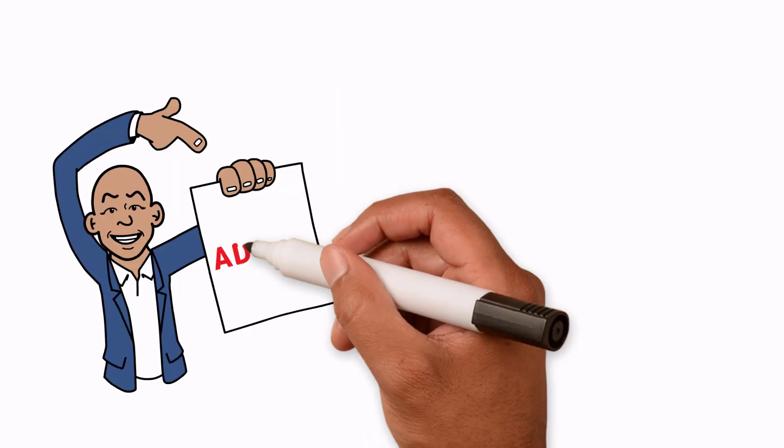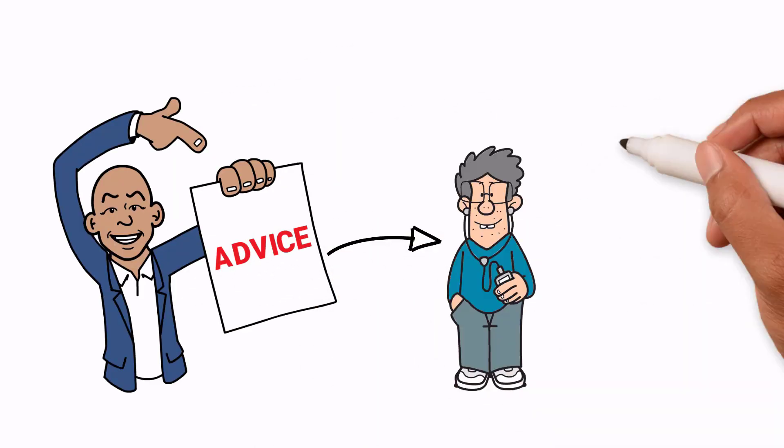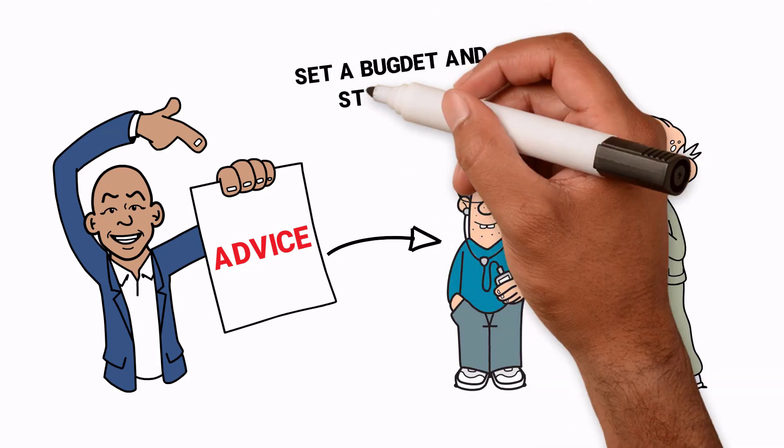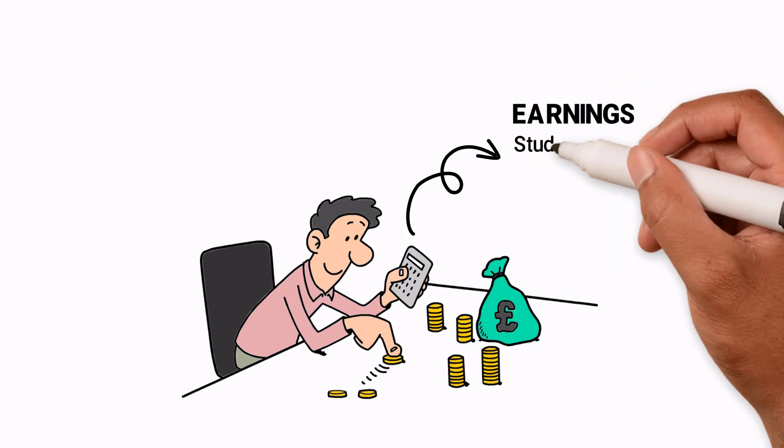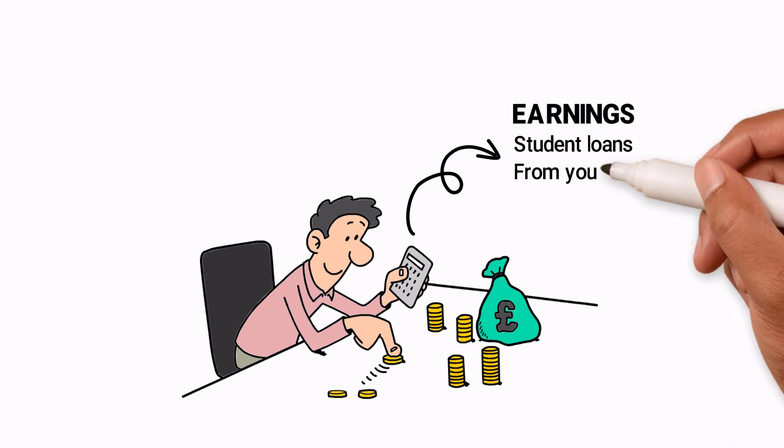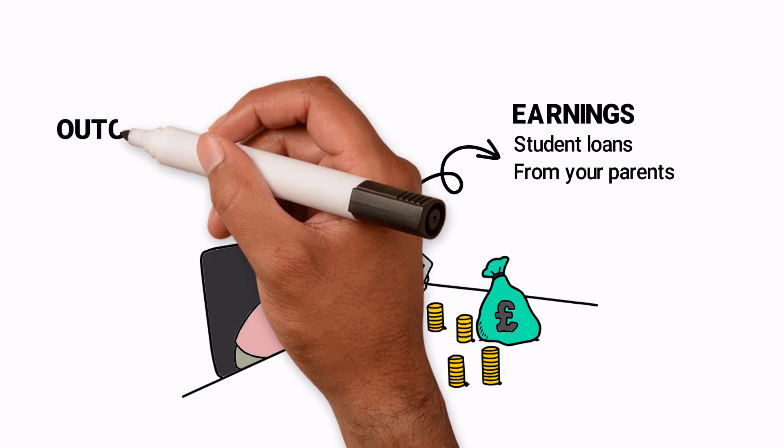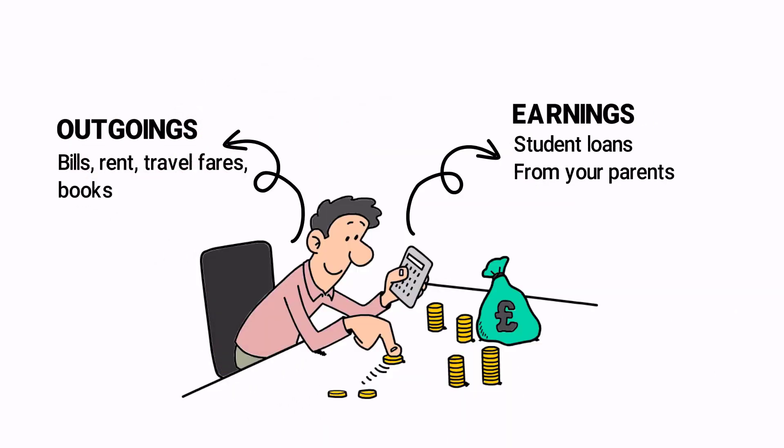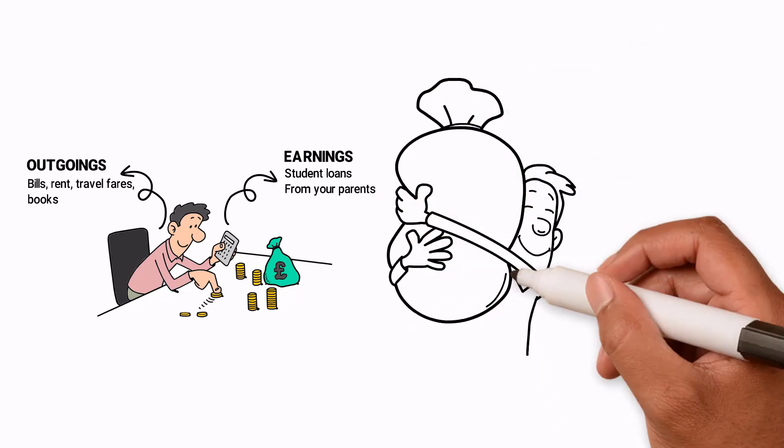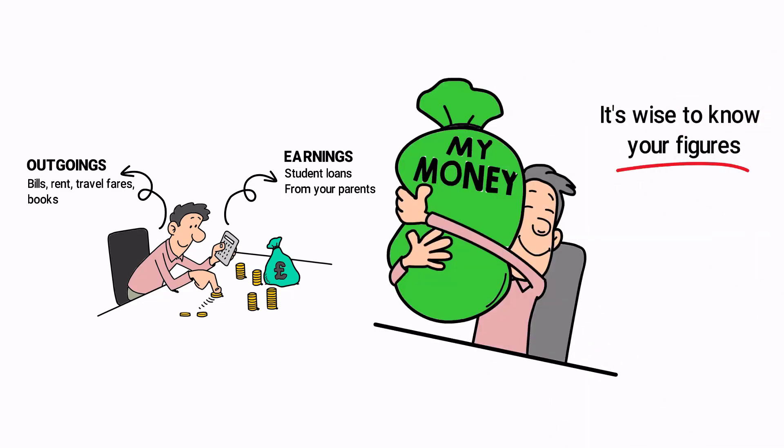Set a budget. This crucial piece of advice applies if you're 17 or 70. Set a budget and stick to it. Work out how much money you make every month from earnings, student loans and, if you're lucky, from your parents. Then work out your outgoings, include bills, rent, travel fares and books. Whatever you have left is the limit you can spend each month, so it's wise to know your figures.